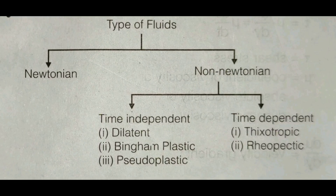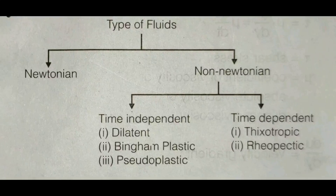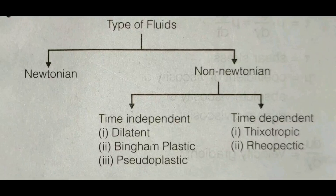Fluids can be classified mainly into two types: Newtonian and non-Newtonian. A Newtonian fluid follows Newton's law of viscosity. A non-Newtonian fluid does not follow Newton's law of viscosity. Non-Newtonian fluids are further divided into time-independent and time-dependent types. Time-independent fluids are of three types, and time-dependent fluids are of two types.